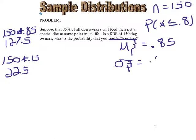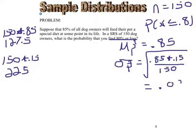So I have 0.85 times 0.15 over 150, and I'm going to square root all of that. When I do that, I get a standard deviation of 0.029.